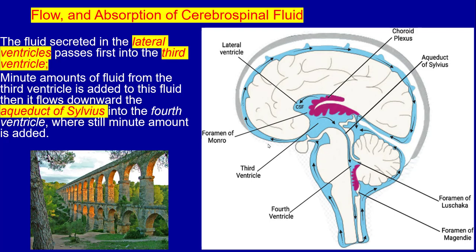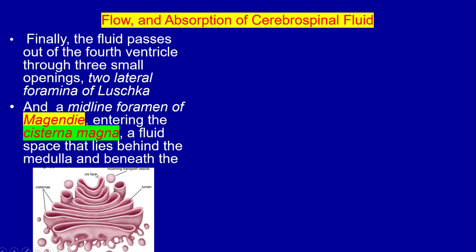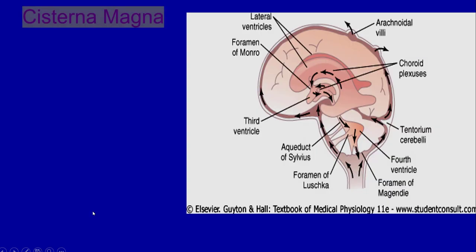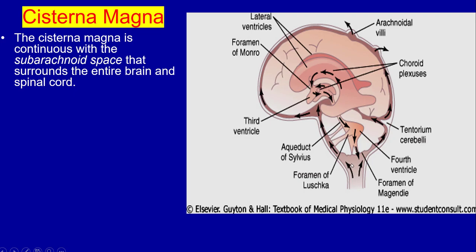Finally, the fluid passes out of the fourth ventricle through three small openings: two lateral foramina of Luschka and the midline foramen of Magendie, entering the cisterna magna — a fluid space that lies behind the medulla and beneath the cerebellum. There are three channels by which the CSF passes from the fourth ventricle into the cisterna: the two lateral channels, the foramina of Luschka, and the medial channel, the foramen of Magendie. The cisterna magna is continuous with the subarachnoid space.